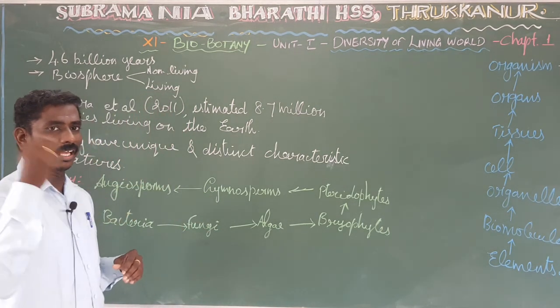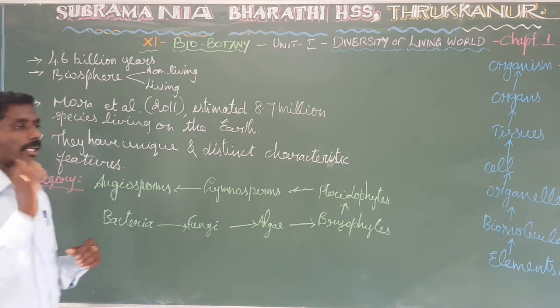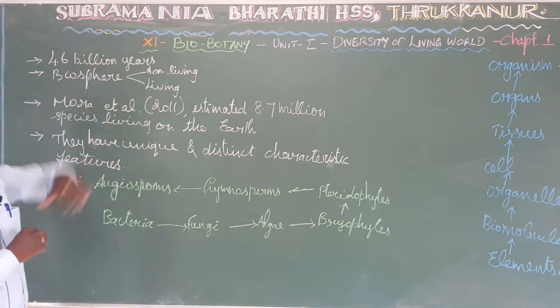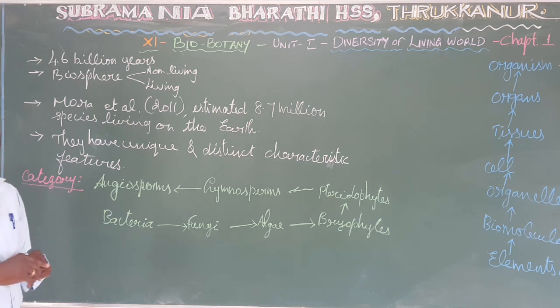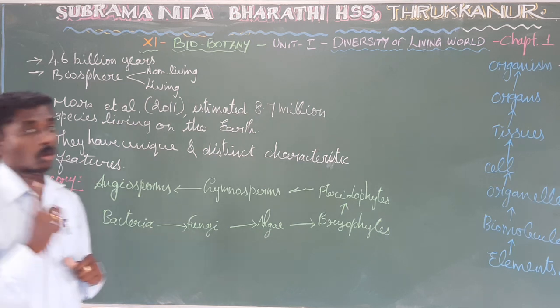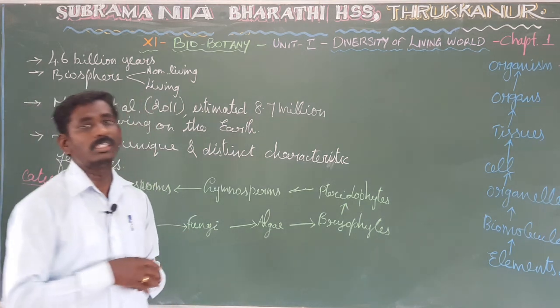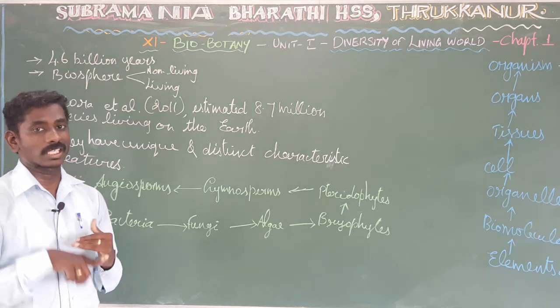The age of the earth is 4.6 billion years. One billion is equal to 100 crores, so 4.6 billion equals 460 crores years.